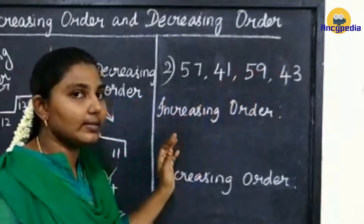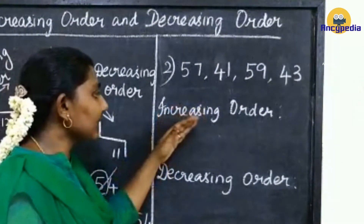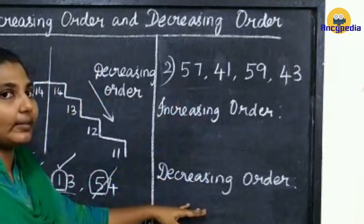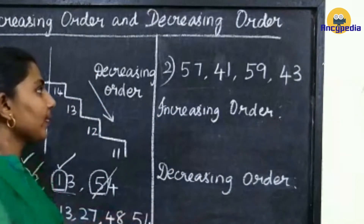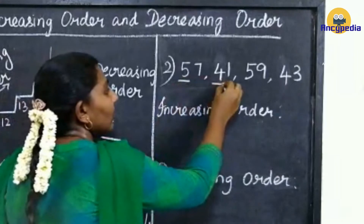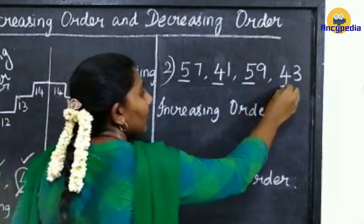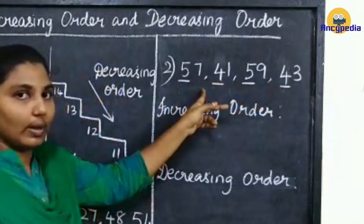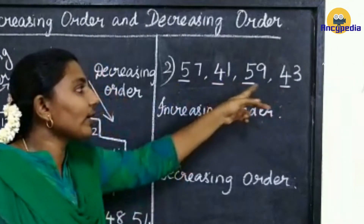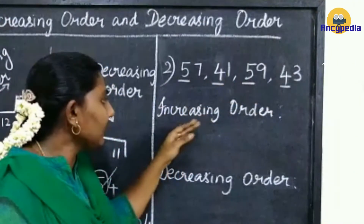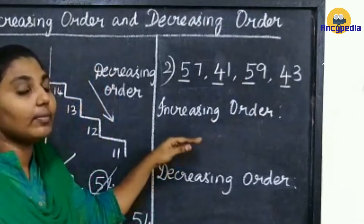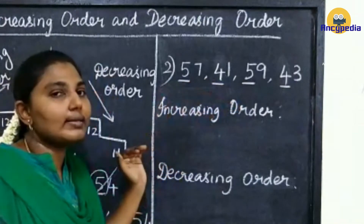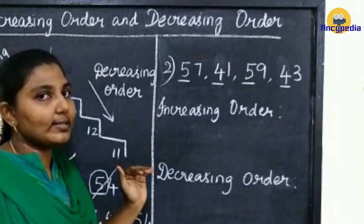Here we have 4 numbers. You are going to write the numbers in increasing order and decreasing order. For that, first you have to compare the numbers in the tens place. Here we have 5, here 4, here 5, here 4. We have 5 in two numbers and 4 in two numbers. For increasing order, we have to write from smaller to larger. Compare 5 and 4 — which one is smaller? 4 is smaller.